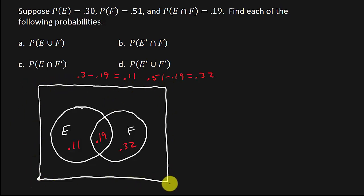So everything in this box has to add up to 1. So what number goes out here? Well, it's going to be 1 minus 0.11 minus 0.19 minus 0.32. And that's going to give us 0.38. So that's 0.38 outside.